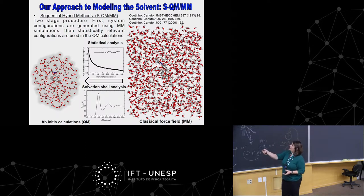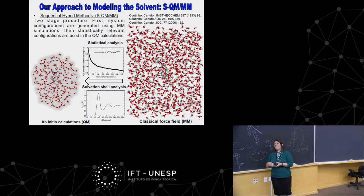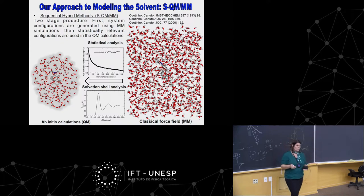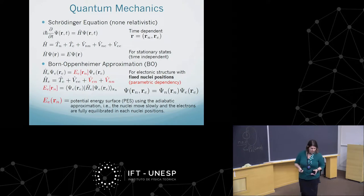In the classical simulation we generally generate around millions of configurations accessible under the thermodynamic conditions, but we cannot perform millions of quantum mechanical calculations. So we use statistical analysis to reduce the number of configurations needed for the quantum mechanical step. Having a much smaller system, based on the distribution of the solvent around the solute, we then proceed to quantum mechanics.